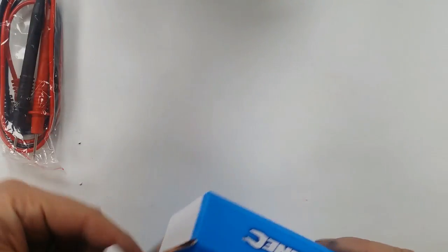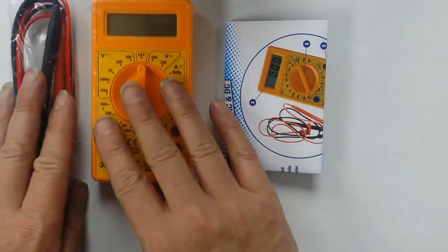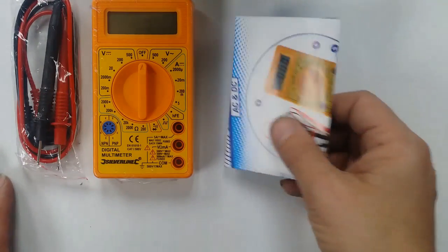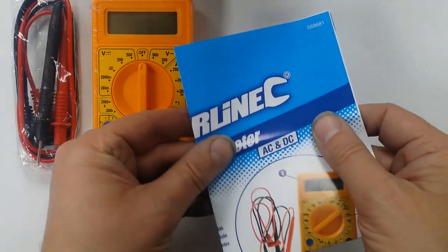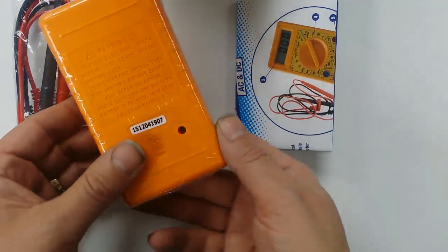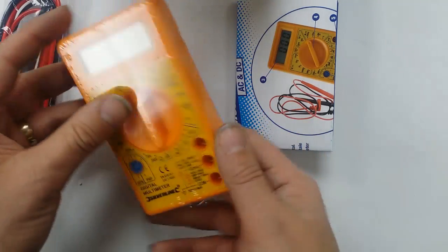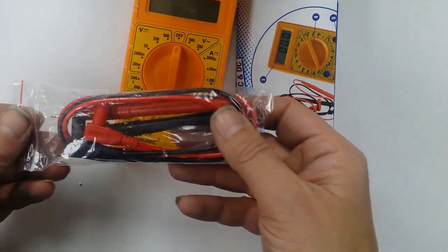Let's open the packaging first. You've got some leads. Let's get the box out of the way. Now this is what comes in the box. You've got a single leaflet set of instructions, a shrink-wrapped meter, and some leads.